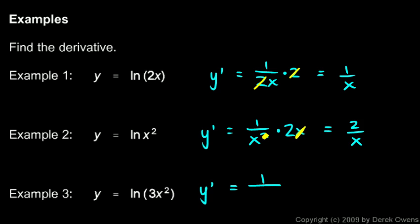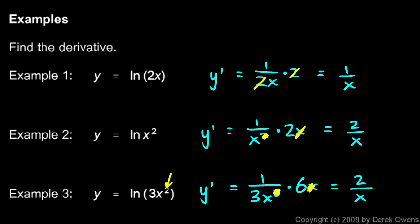For ln(3x²), y-prime is one over 3x squared times the derivative of 3x squared, which is 6x. The x cancels one from the denominator, and 6 over 3 reduces to 2, leaving 2 over x again. Notice the 3 cancelled just like the 2 did in the previous example, and the exponent of 2 shows up in the answer.